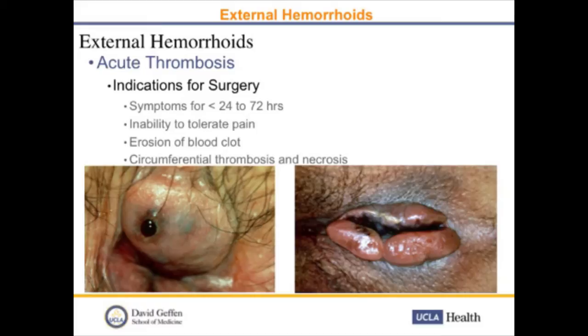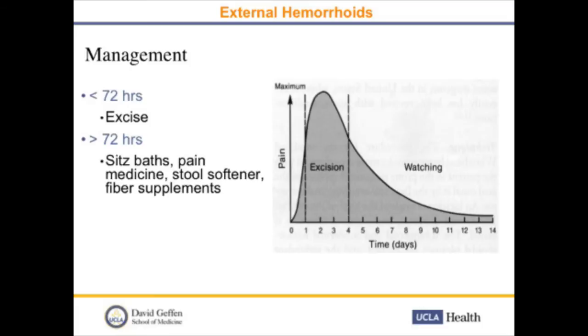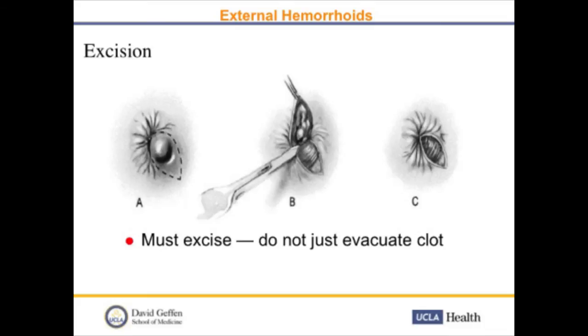Regarding external hemorrhoids, patients with acute thrombosis — indications for surgery include symptoms lasting fewer than 72 hours, inability to tolerate pain, erosion of the blood clot, and circumferential thrombosis and necrosis. We usually defer excision for patients who've had pain for over 72 hours, as the pain from excision is actually worse than watchful waiting. These patients are advised to perform sitz baths, get pain medication, stool softeners, and fiber supplementation. For patients who qualify for excision, we want to excise the entire area and not just evacuate the clot, because clots can reform.